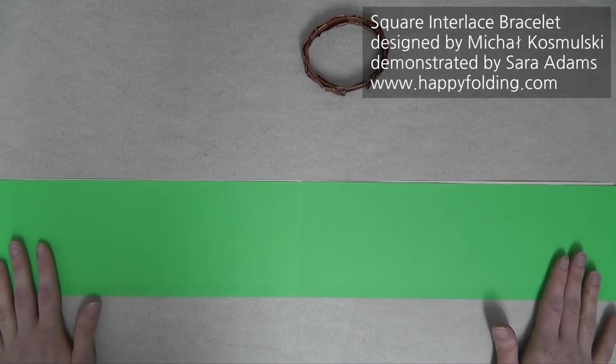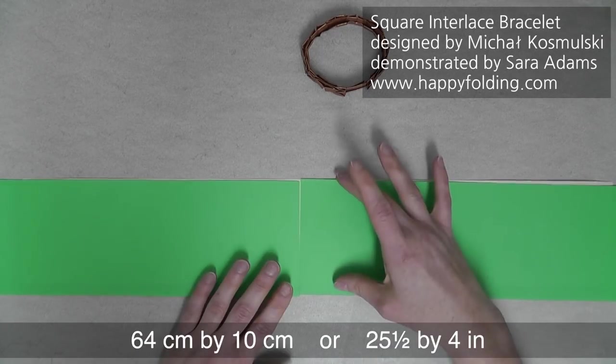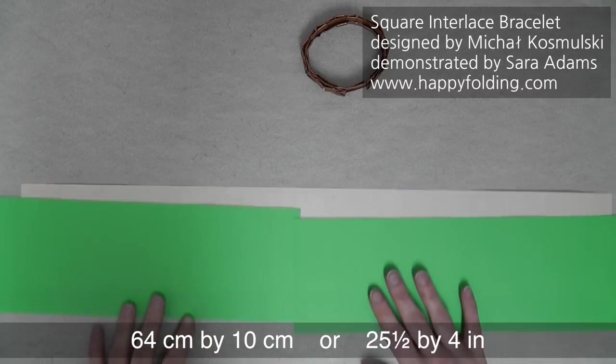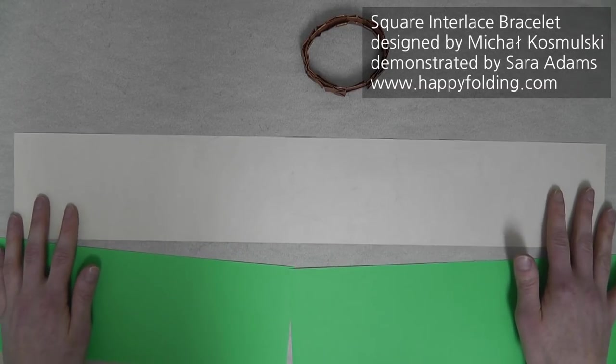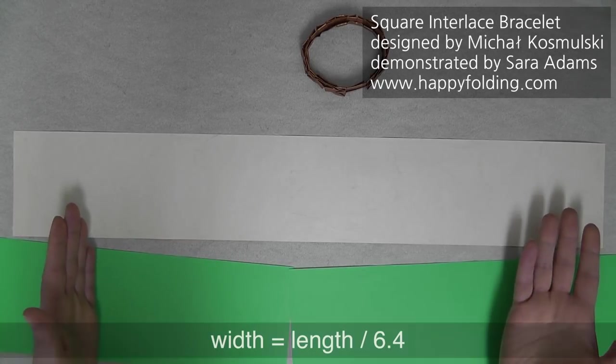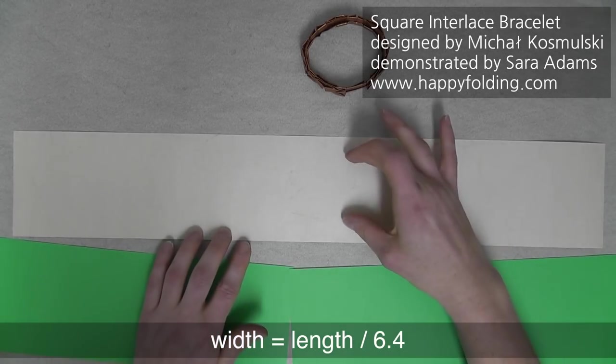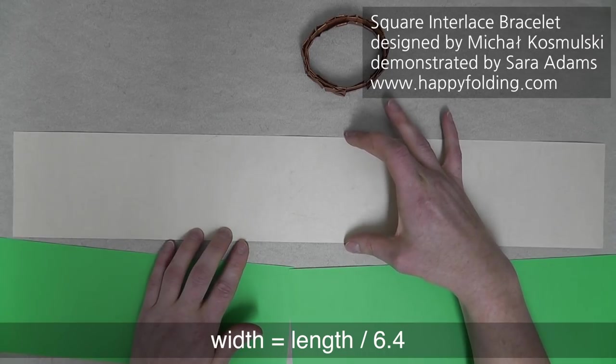This strip is a bit longer, 64 centimeters, and it's 10 centimeters wide. So if you have your strip of the length that you require, you measure the length and divide it by 6.4, and that gives you the width of the strip.